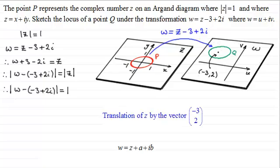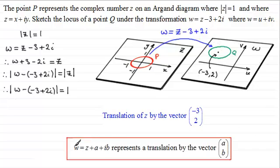So summarizing, we've got a translation of this circle by the vector (minus 3, 2). This leads us to the general definition that if you've got the transformation w equals z plus a plus ib, it represents a translation by the vector (a, b).